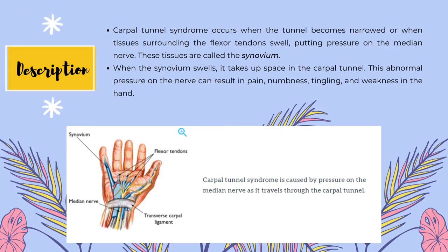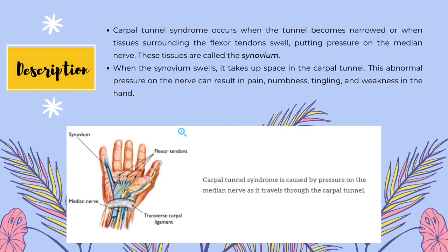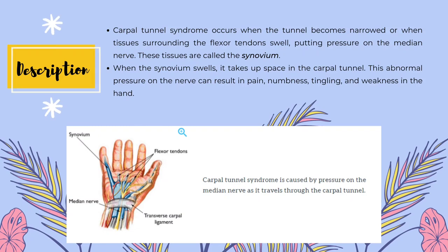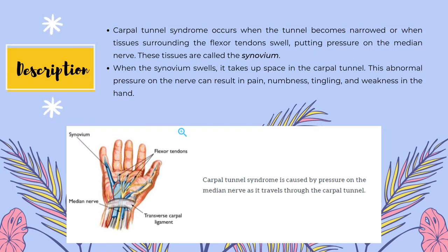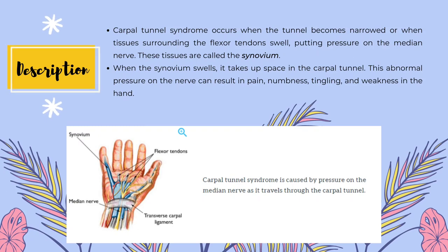Other than that, carpal tunnel syndrome occurs when the tunnel becomes narrowed or when the tissues surrounding the flexor tendons swell, putting pressure on the median nerve. These tissues are called the synovium. Normally, the synovium lubricates the tendons, making it easier to move the fingers. When the synovium swells, it takes up space in the carpal tunnel and over time compresses the nerve. This abnormal pressure on the nerve can result in pain, numbness, tingling and weakness in the hand.